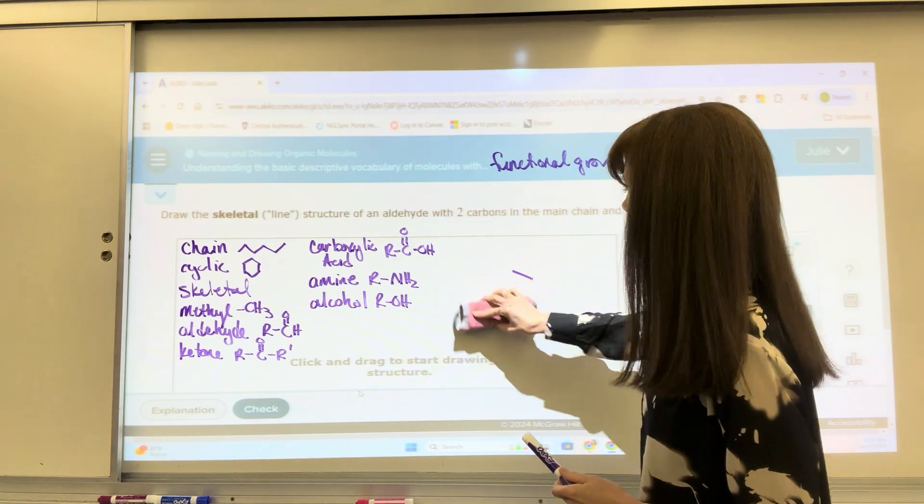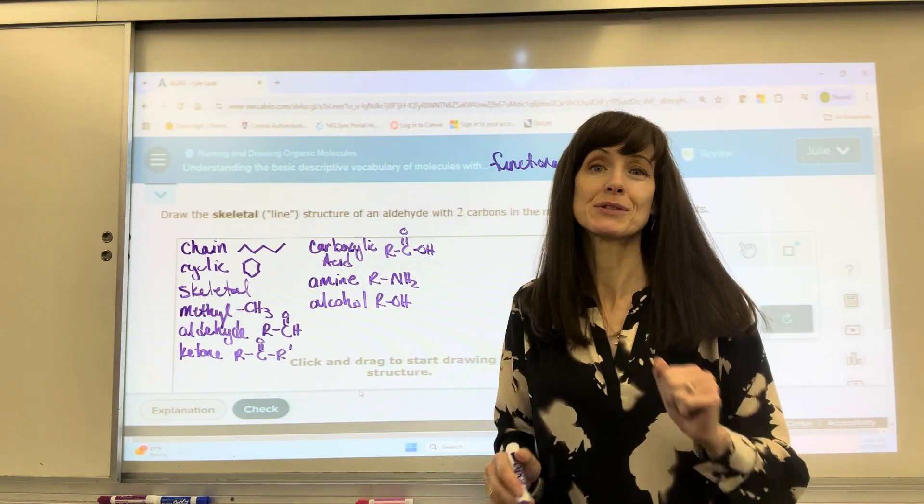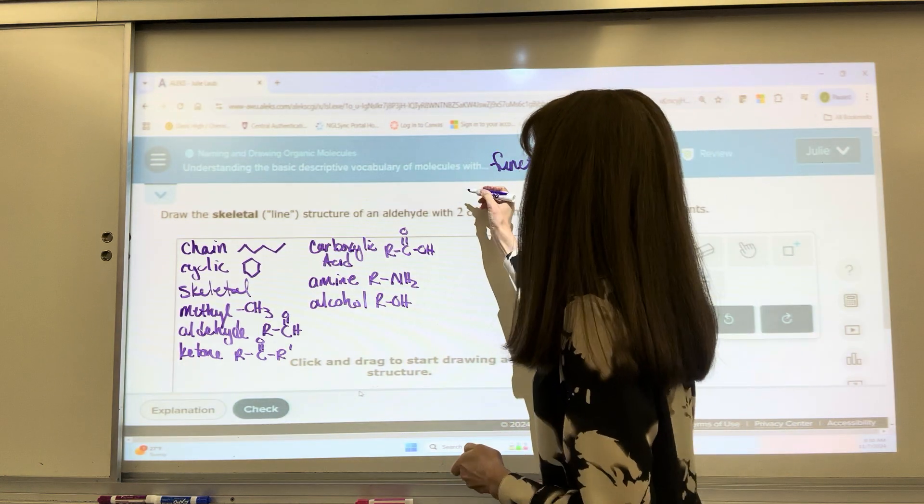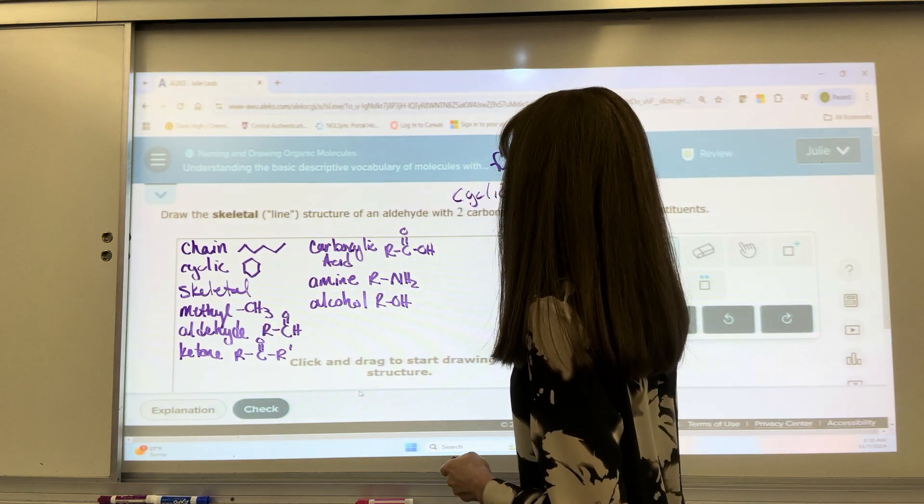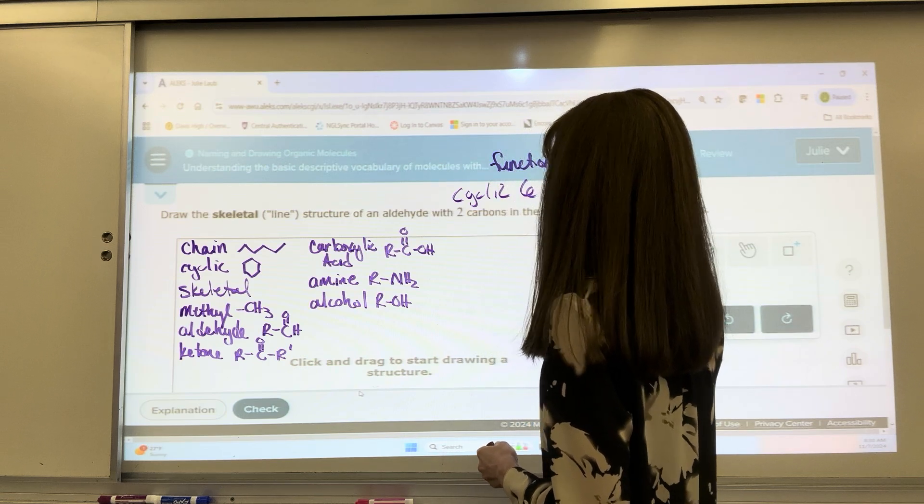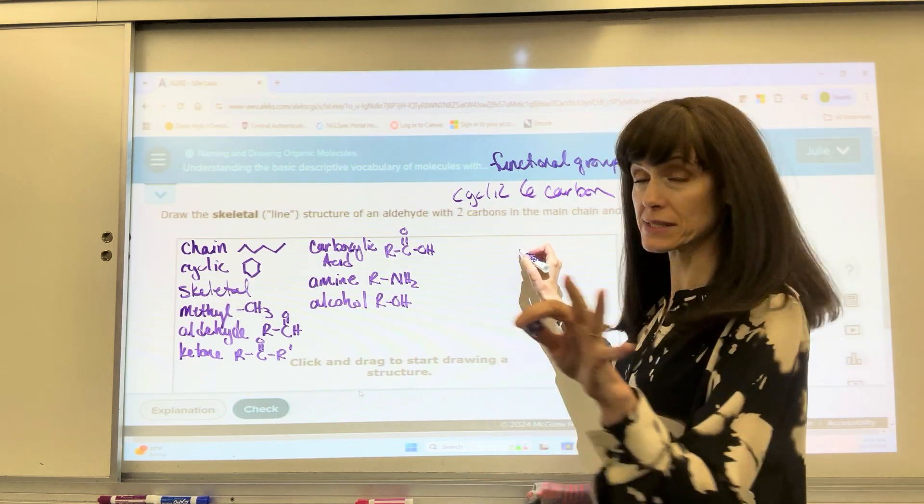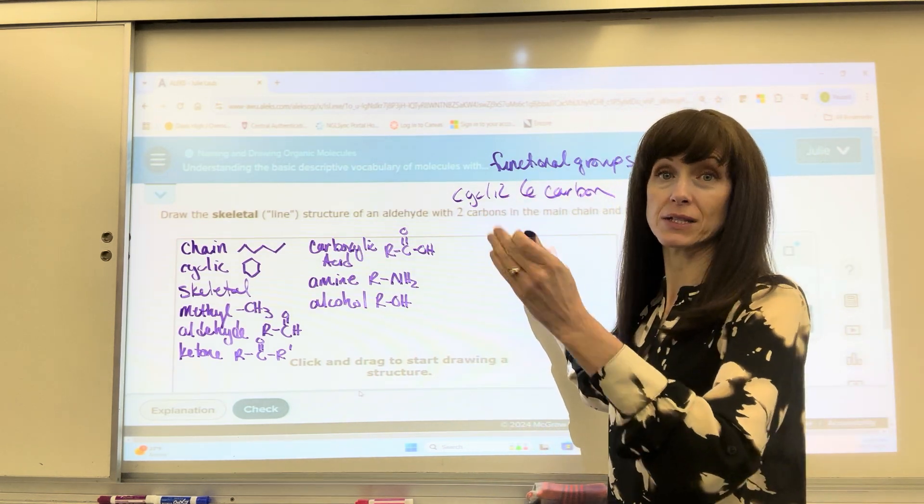If they had cyclical, so let's pretend, okay, I'm just going to make one up for us, that they say you have a cyclic six carbon. Okay. So we have six carbons that are cyclical. You would take your six carbons and wrap that around like a circle. In this case, it's going to be a hexagon shape.